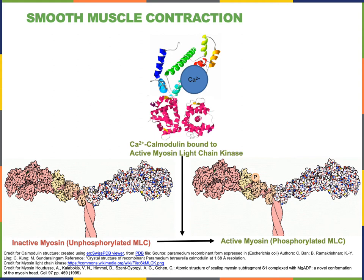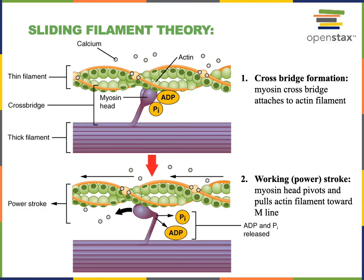Following activation, myosin will perform the four steps of the power stroke cycle in the sliding filament theory, just like in skeletal muscle fibers. The first step is crossbridge formation when myosin binds to actin. This is stimulated when calcium binds to calmodulin, and then calmodulin activates myosin light chain kinase, which phosphorylates myosin in order to stimulate crossbridge formation.